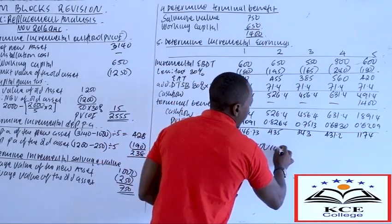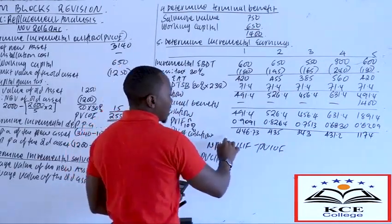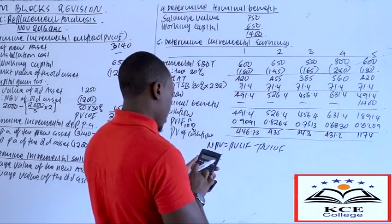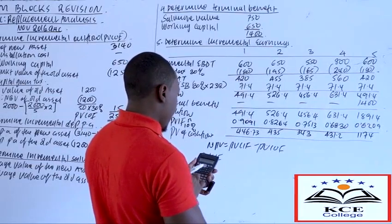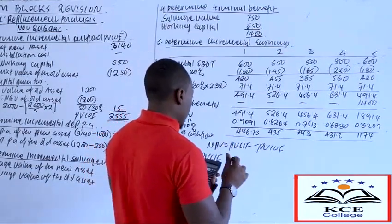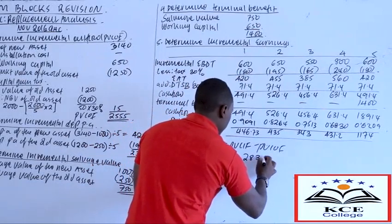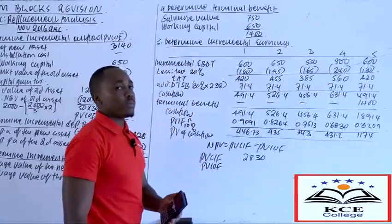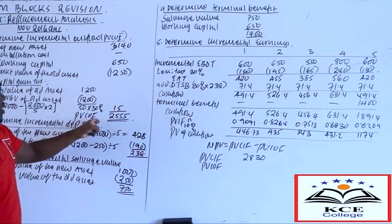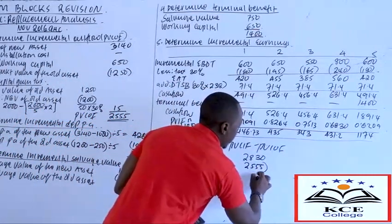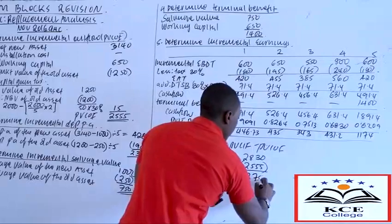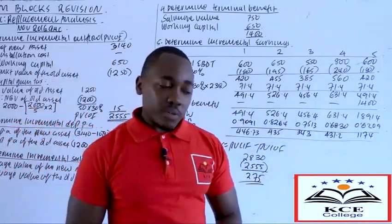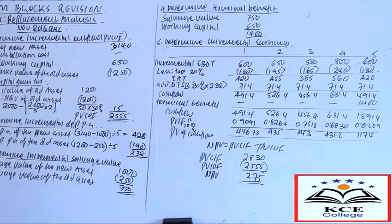NPV equals the present value of cash inflows minus the present value of cash outflows. Summing the discounted cash flows gives a total present value of cash inflows of approximately 2,830,000. Deducting the present value of cash outflows from step one of 555,000 gives an NPV of approximately 275,000. Since the NPV is positive, you should advise management that they should replace the machine.